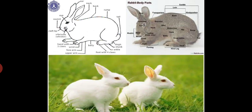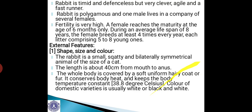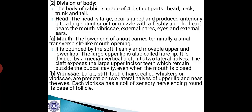The diagram shows the different parts of the body of the rabbit. The body of the rabbit is made of four distinct parts: head, neck, trunk, and tail. The head is large, pear-shaped, and produced anteriorly into a large blunt snout or muzzle with a fleshy tip. The head bears the mouth, vibrissae (antenna-like or moustache-like projections), external ears, and eyes. These are the important structures that can be seen in the head of this rabbit.